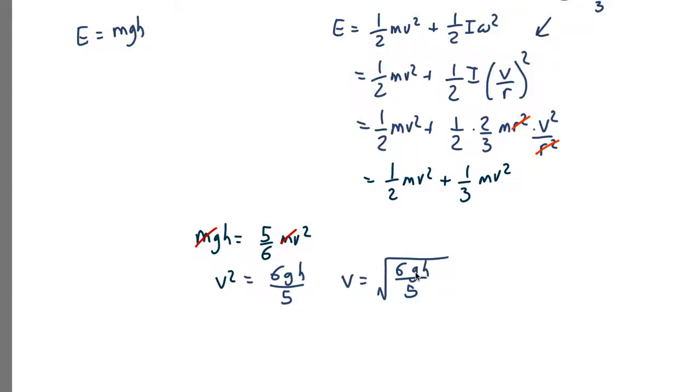So v equals root six g h over five. We can check units: g is meters over second squared times h which is height in meters so it's going to be meters squared over second squared. Square root of that is meters per second which is velocity so that makes sense. Functional form: if you make the slope high it will roll faster which makes sense. If you make g gravity stronger it will roll faster which makes sense. So this looks plausible.